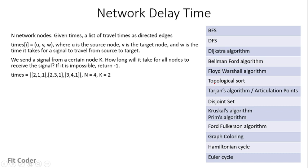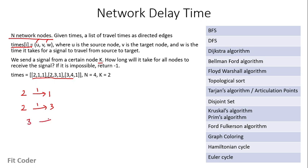The next problem is network delay time. We are given n network nodes and data in the form of times[i], where U is the source node, V is the target node, and W is the time taken for the signal to travel from vertex U to vertex V. We send a signal from a certain node K and have to find how long it will take for all nodes to receive the signal. Drawing this as a graph: edge from 2 to 1 with weight 1, from 2 to 3 with weight 1, and from 3 to 4 with weight 1.